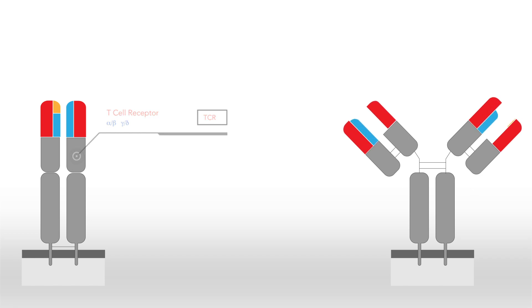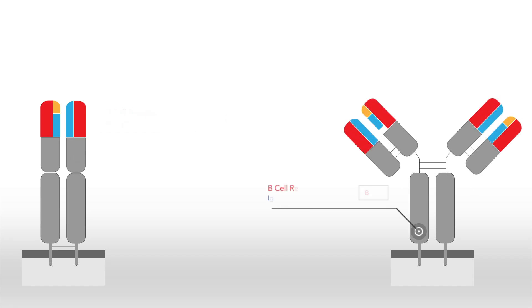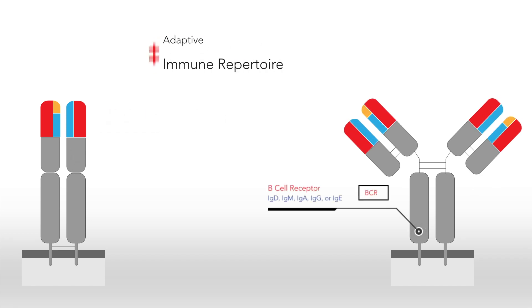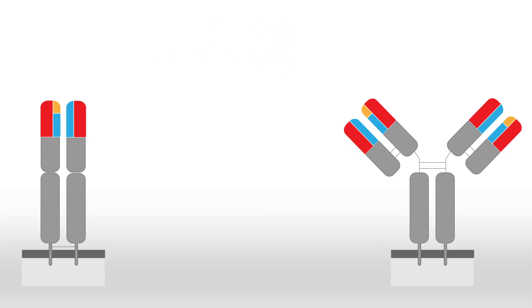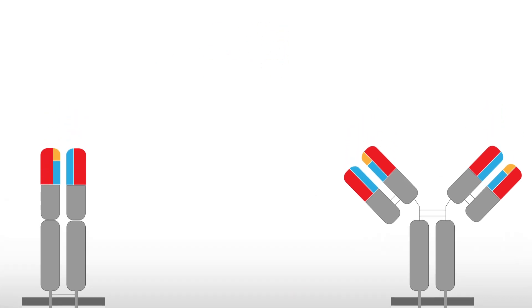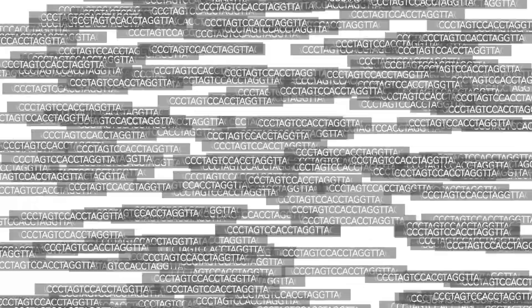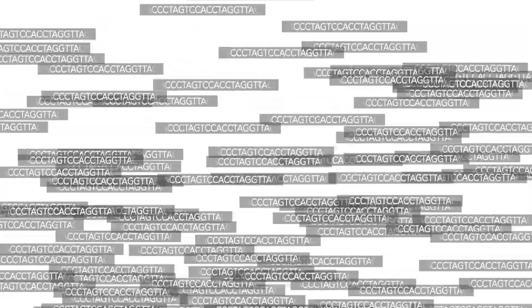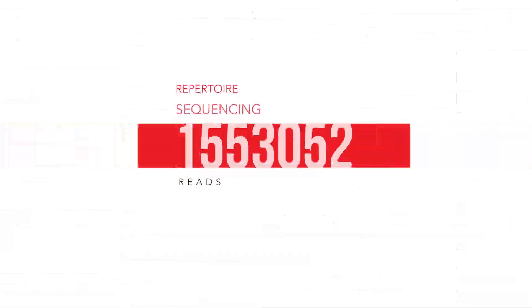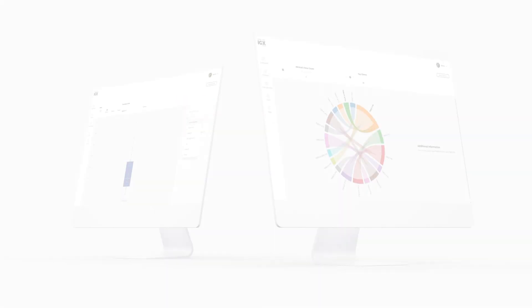The highly diverse collection of B or T cell receptors is referred to as the adaptive immune repertoire and contains a wealth of information about past and ongoing immune responses. Repertoire sequencing experiments typically generate hundreds of thousands to millions of sequencing reads per sample.